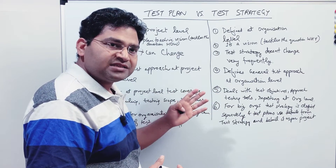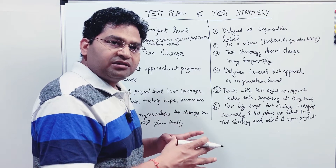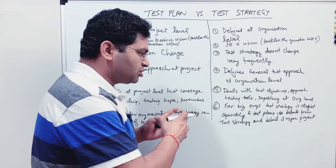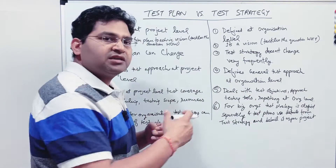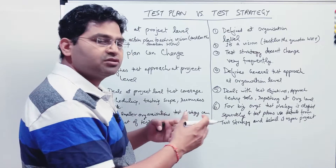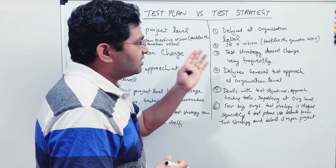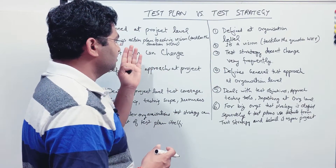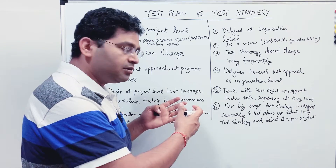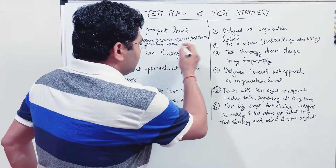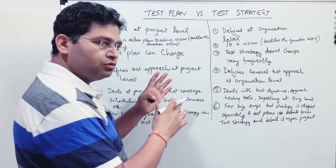For example, if your organization is into medical equipment testing, the test strategy will tackle why you are performing the test process in a particular way for medical equipment — which is different from internet or e-commerce applications. So strategy is a vision that answers 'why,' and the test plan is the action plan for 'how' you will do the testing for a particular project.